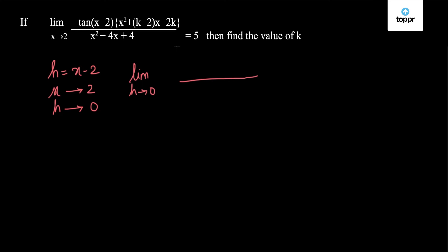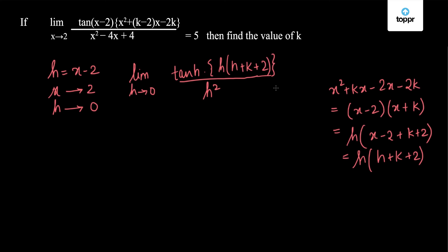This denominator is an expansion of (x - 2) whole square, so we have h square. Tan(x - 2) becomes tan h, and this bracket we can simplify further: x² + kx - 2x - 2k equals (x - 2) times (x + k). So this is h, and adding and subtracting 2, we get (x - 2 + k + 2), which is h times (h + k + 2). So we substitute this and the limit is given to be equal to 5.